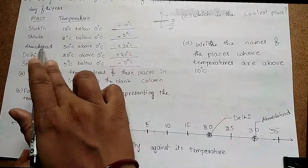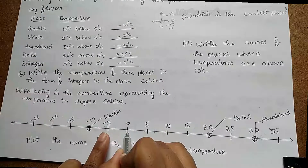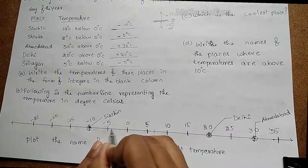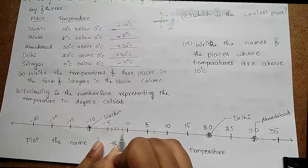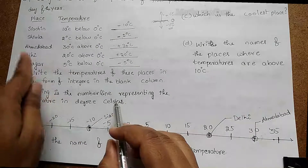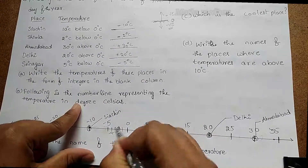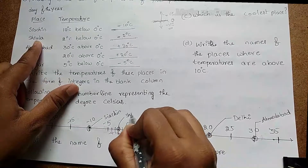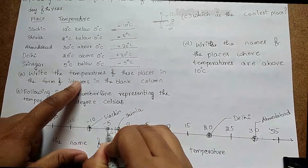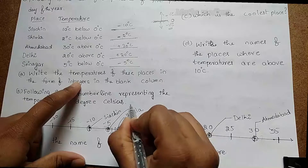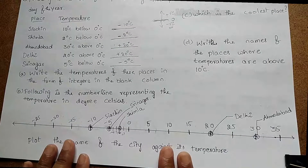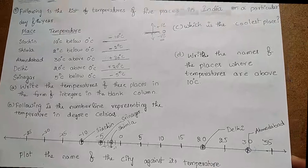Now, Simla is −2°C. From 0 to −5, we divide it equally into segments: 0, −1, −2, −3, −4, −5. So −2 is marked here — that is Simla. Next, Srinagar is −5°C, so −5 on the number line is marked here for Srinagar. These are the representations of all the given places according to their temperatures.